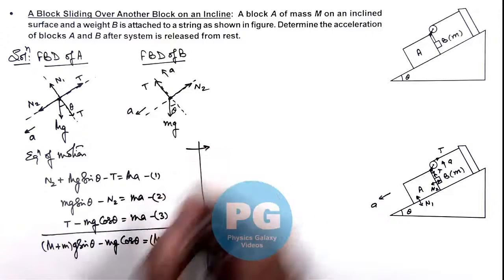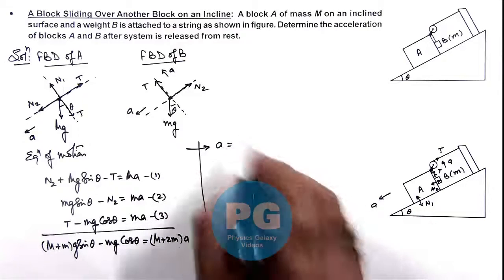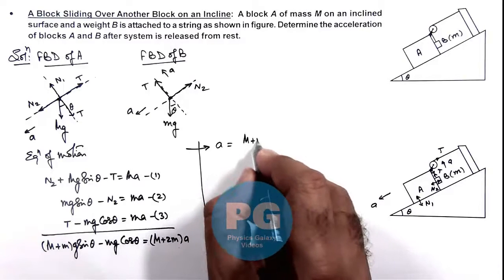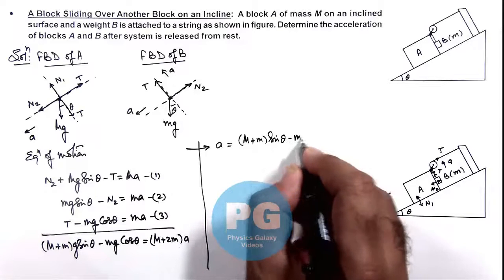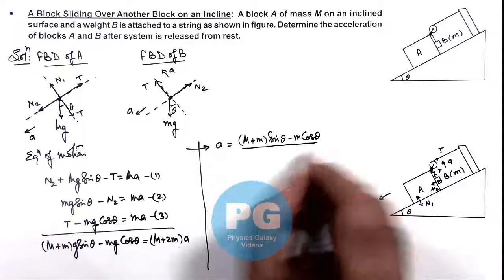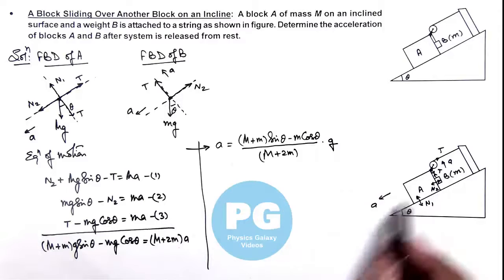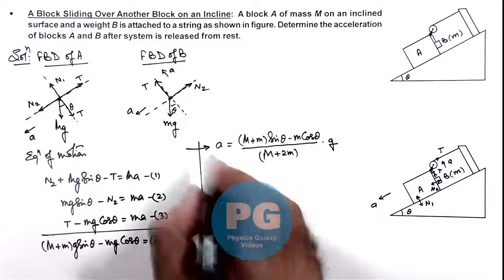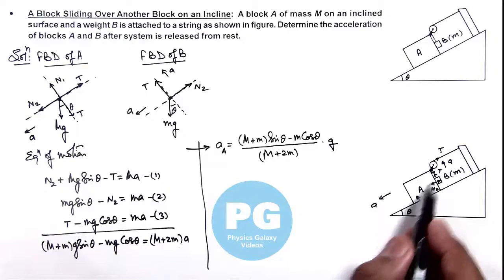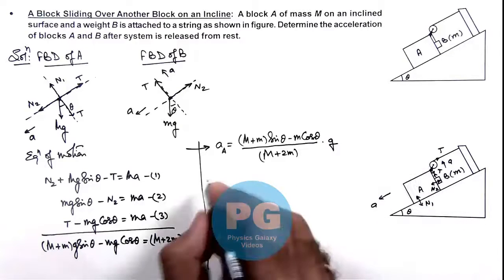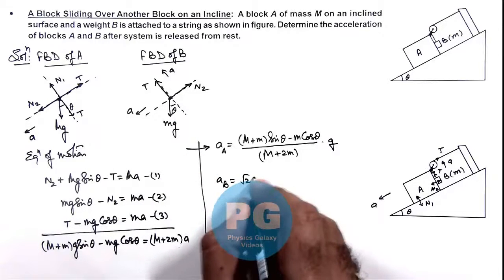From this, the value of acceleration ay for block A is: ay = [(M + m) sine theta minus m cosine theta] divided by (M + 2m), multiplied by g. For block B, since it moves along with A at acceleration ay and also moves upward at acceleration ay, the resultant acceleration of block B is root 2 times ay.